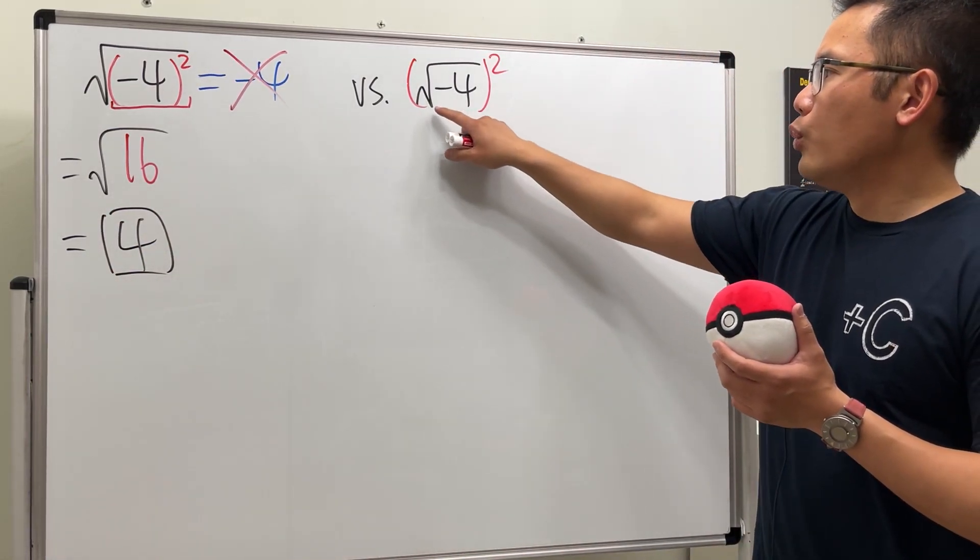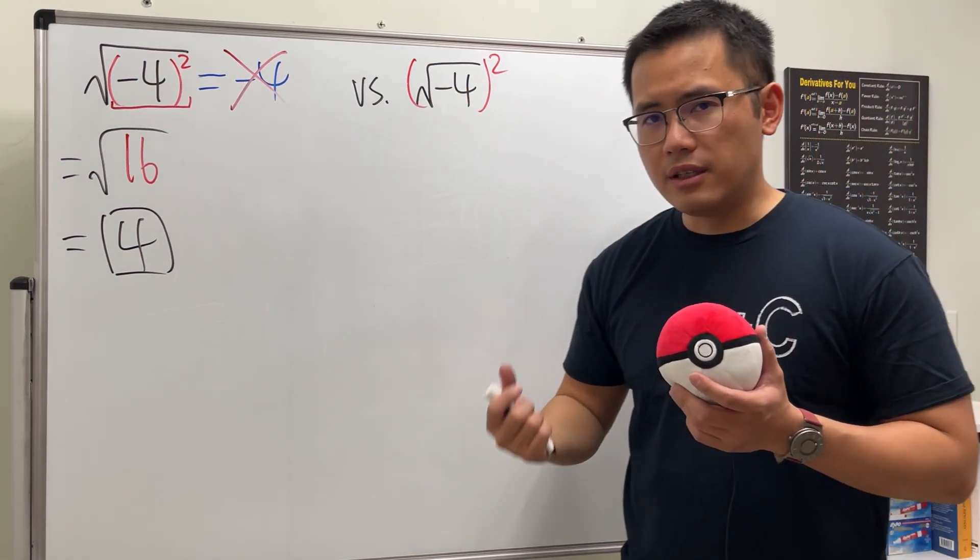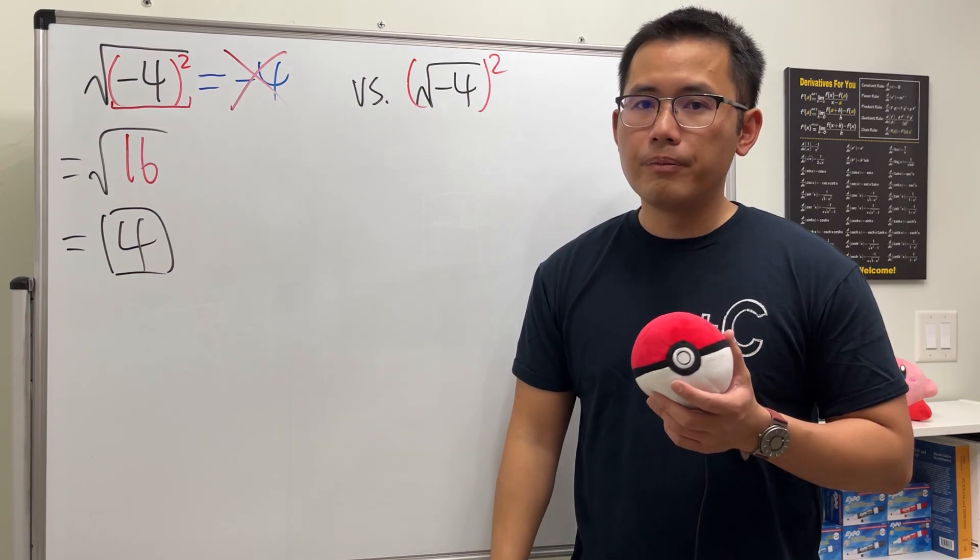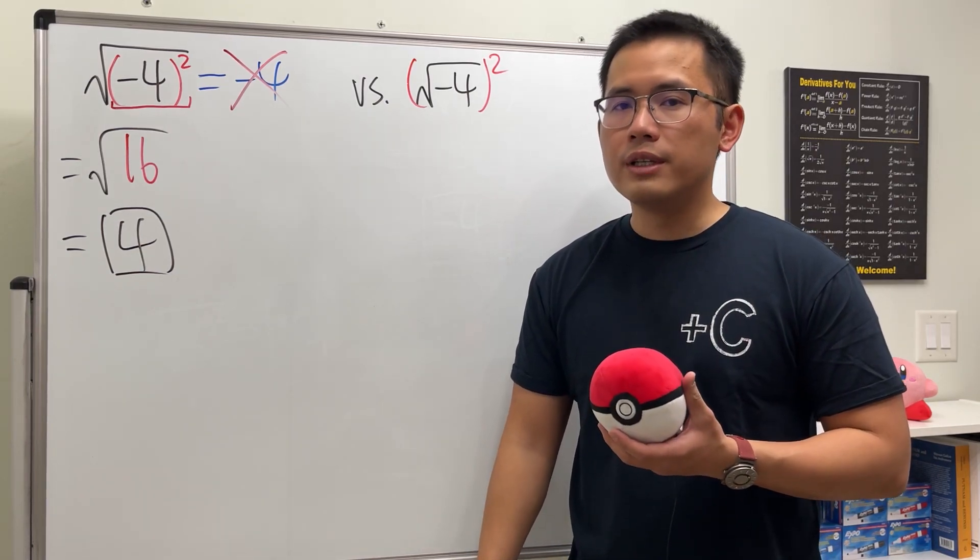But if you look at the second one, when we have the square root of negative 4, this right here does not have any real value. If we have learned about the complex numbers, the imaginary units, then we can continue.